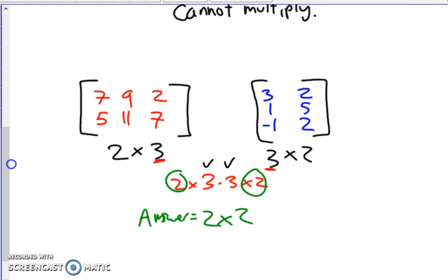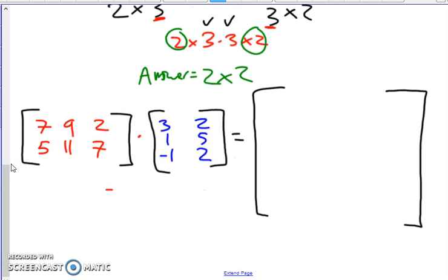So let's actually multiply this. Okay, so let's actually do this multiplication. Again, our answer is going to be a two by two matrix. I'm just writing it big so I can show you the computation.